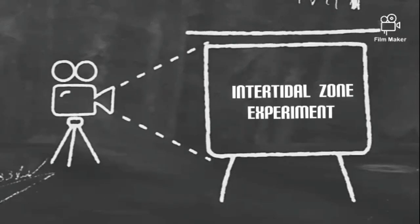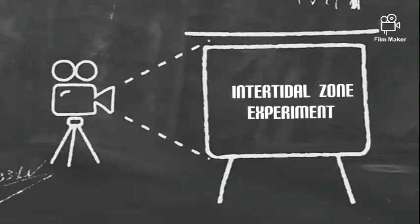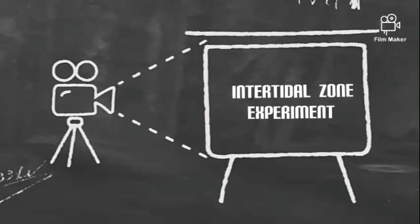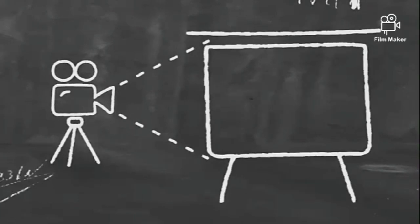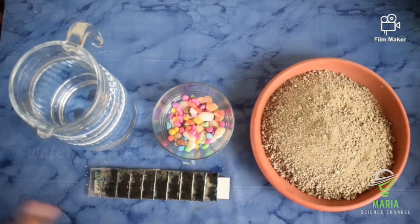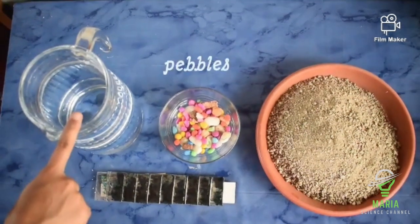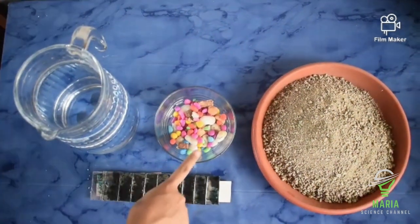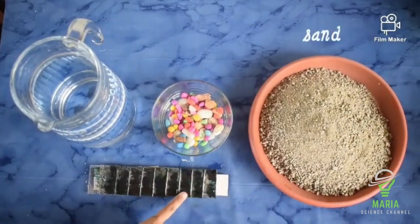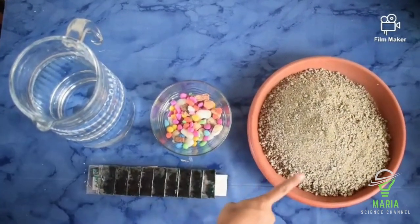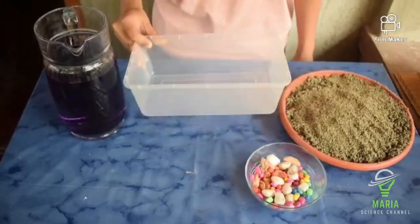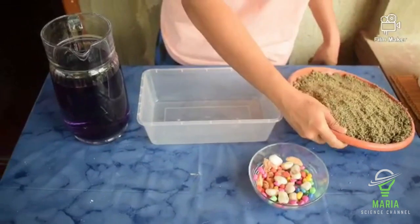For our first video, we are making our own intertidal zone experiment. You will need water, pebbles, food, and sand. Remember, pebbles are just for aesthetic purposes.